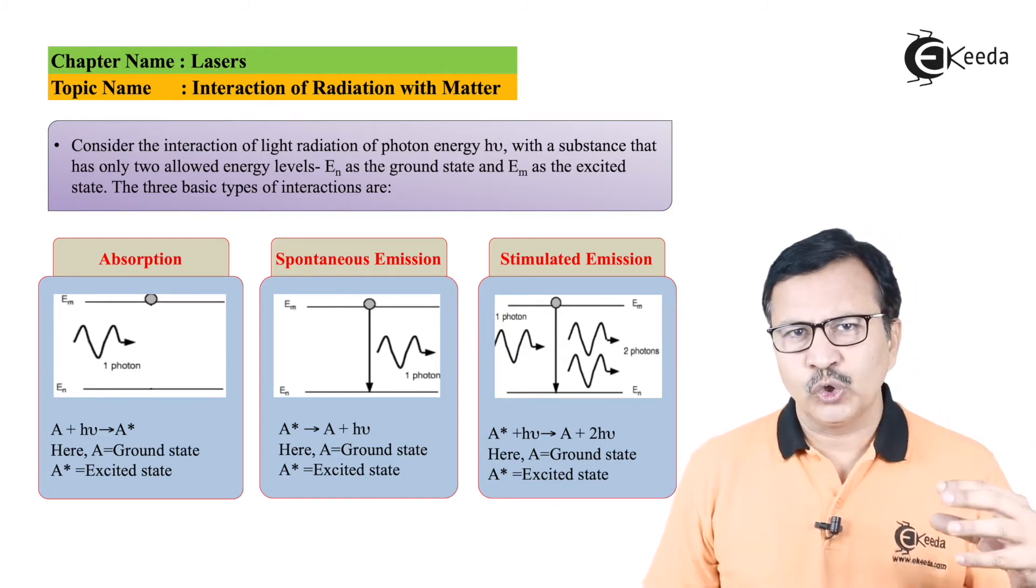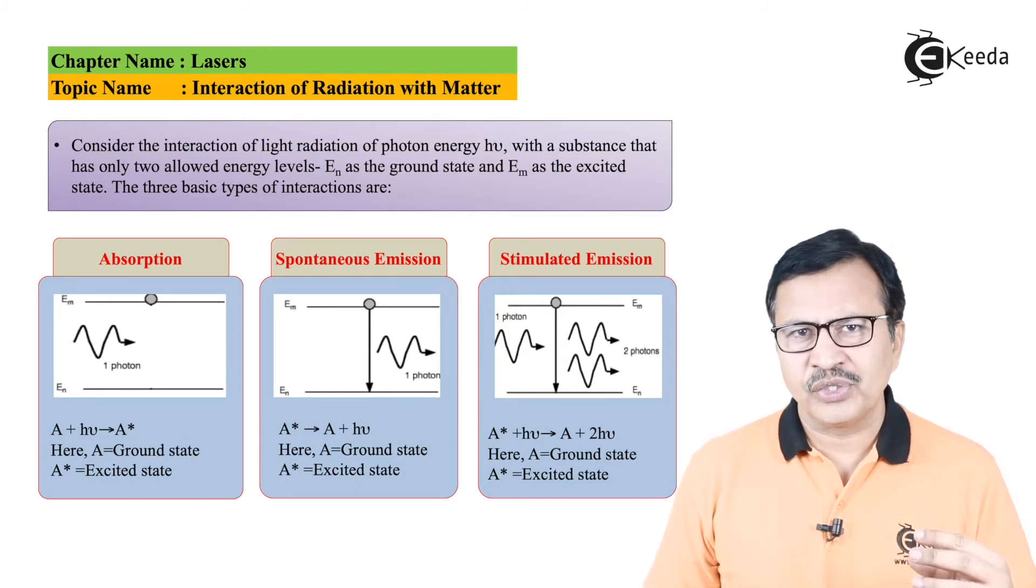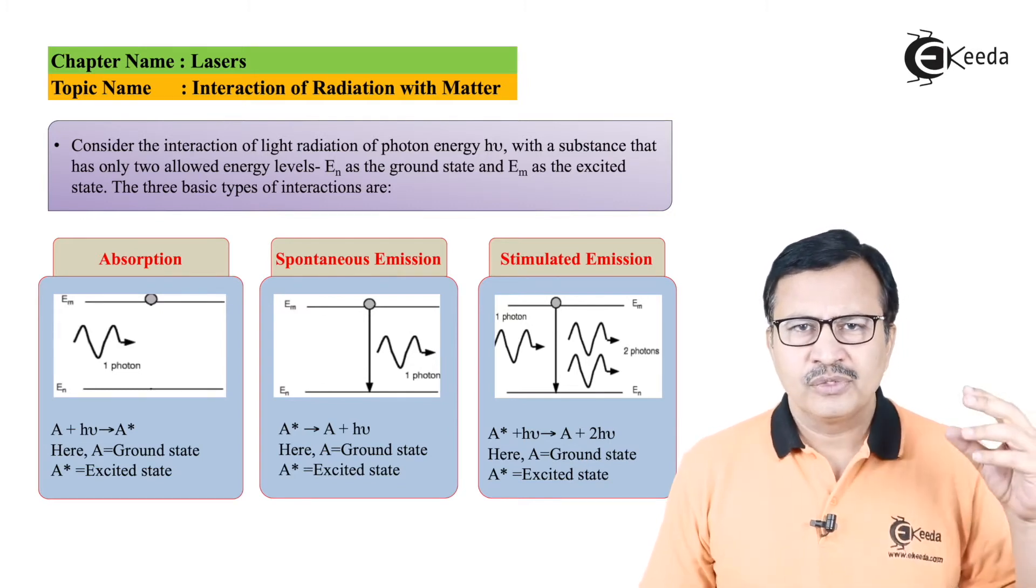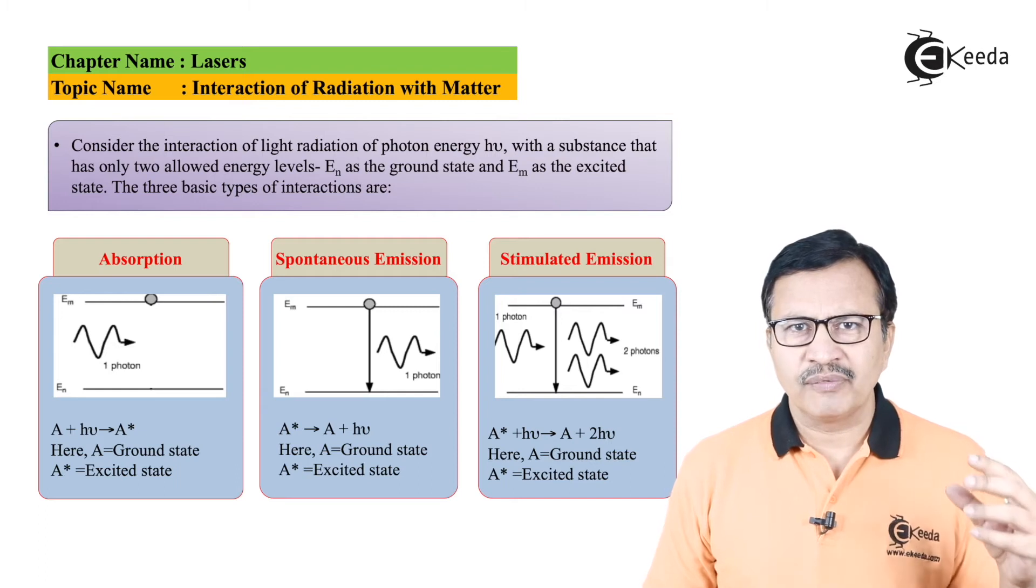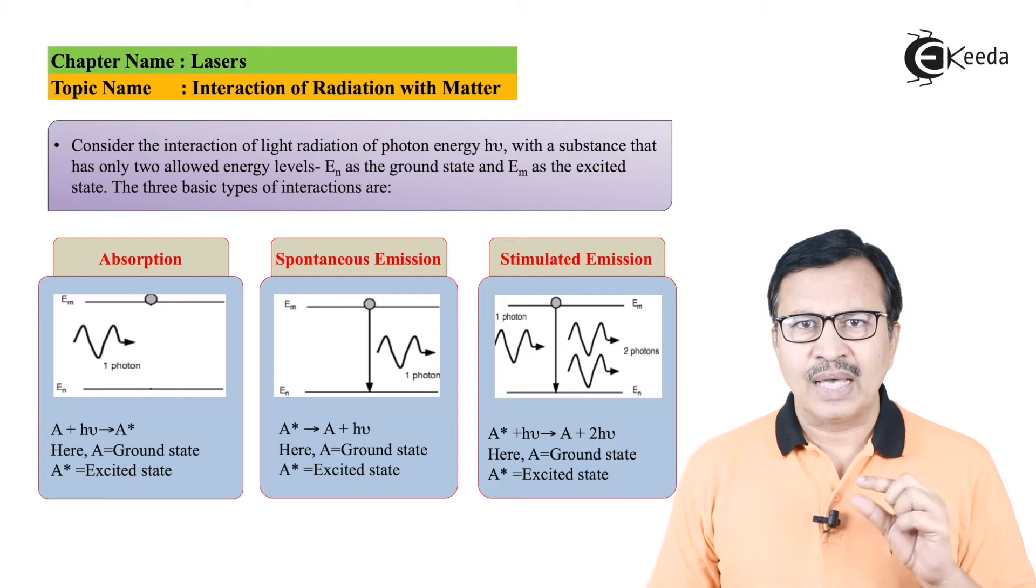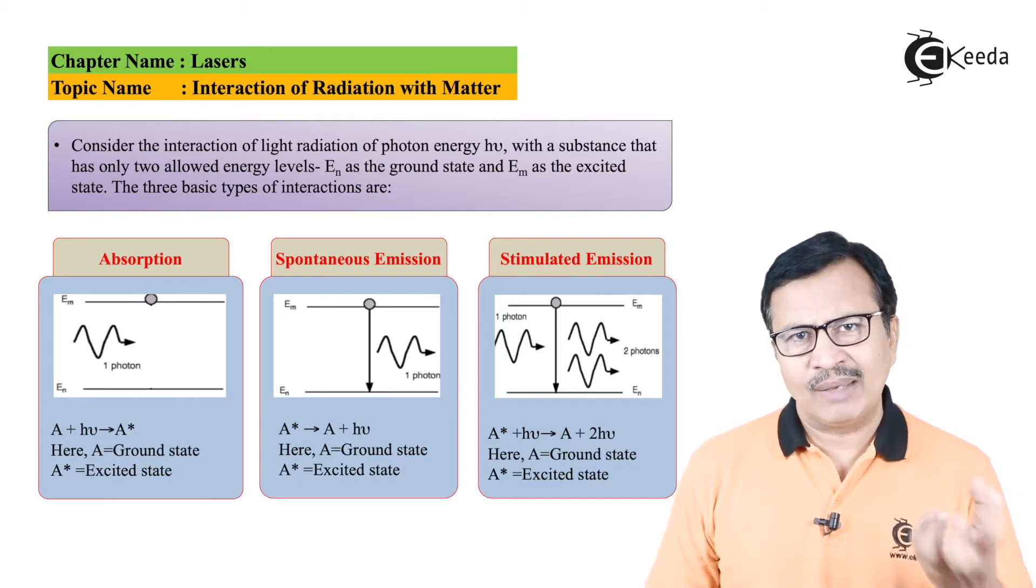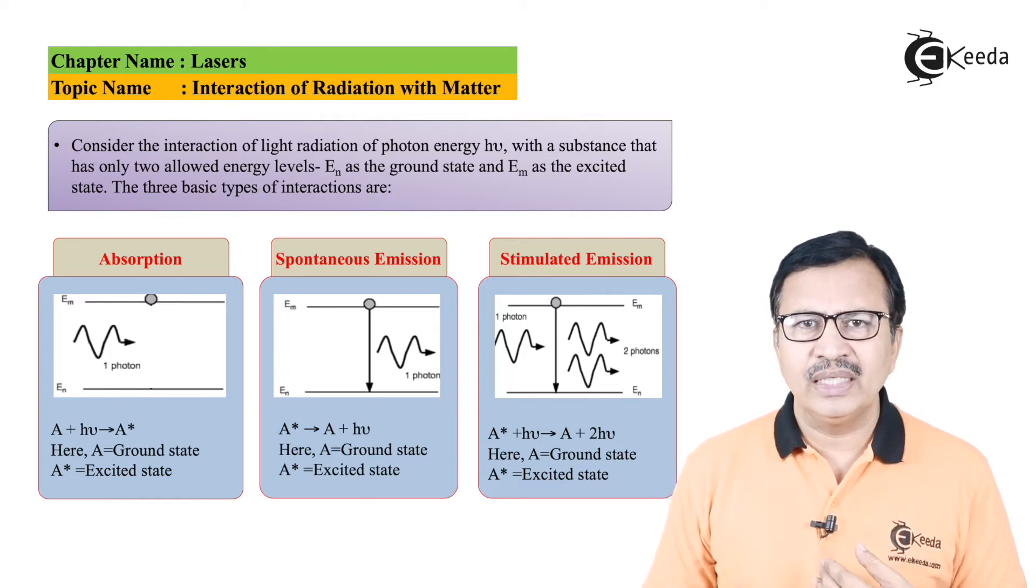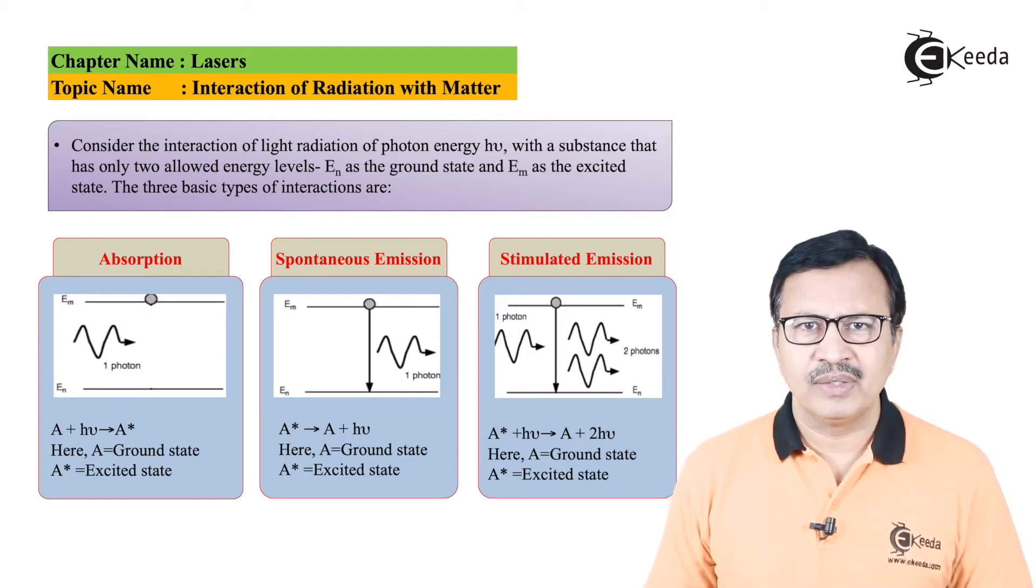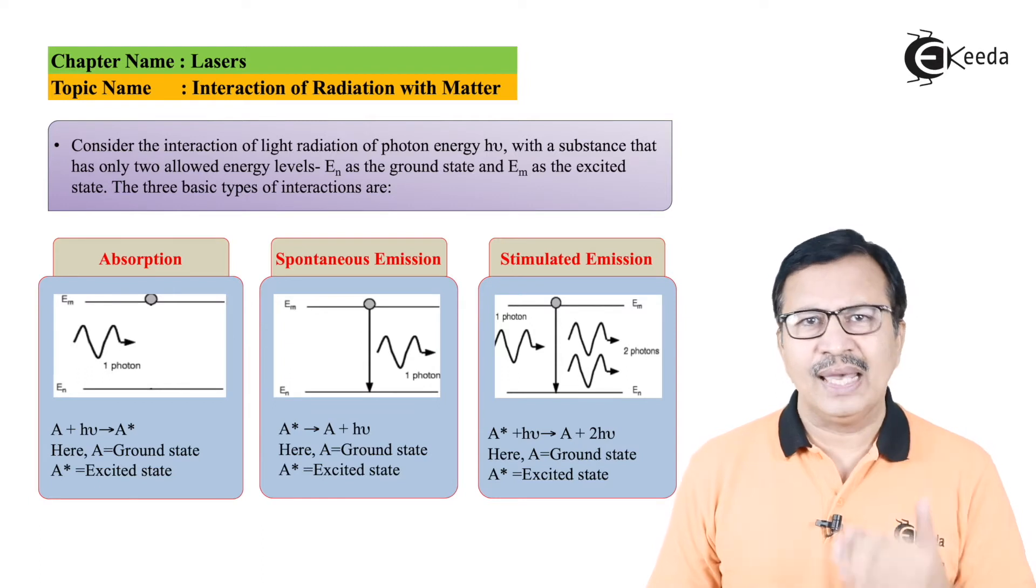So the minute a photon of energy hν interacts with these energy levels of the atoms, the atoms in the ground state will absorb this energy and they will be excited to the higher energy level, that is En.